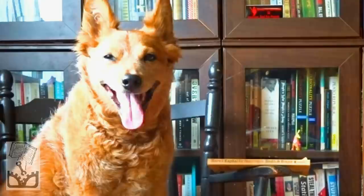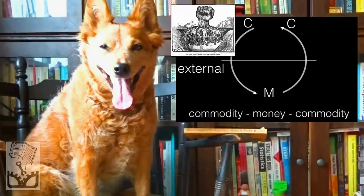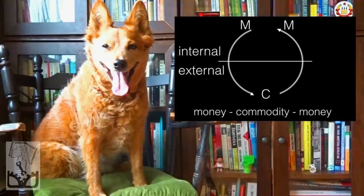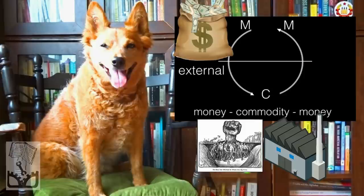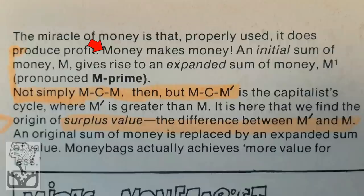This is about commodity-money-commodity versus money-commodity-money. A worker uses a commodity — their labor — to get money, their wages, and then uses that money to buy more commodities: food, clothes, and shelter. While a capitalist uses money to buy capital — labor power and the means of production — and uses that capital to get more money. As Smith and Evans put it: 'Producers sell in order to buy. Capitalists buy in order to sell.' Money makes money: an initial sum M gives rise to an expanded sum M-prime. MCM-prime is the capitalist cycle, where M-prime is greater than M.